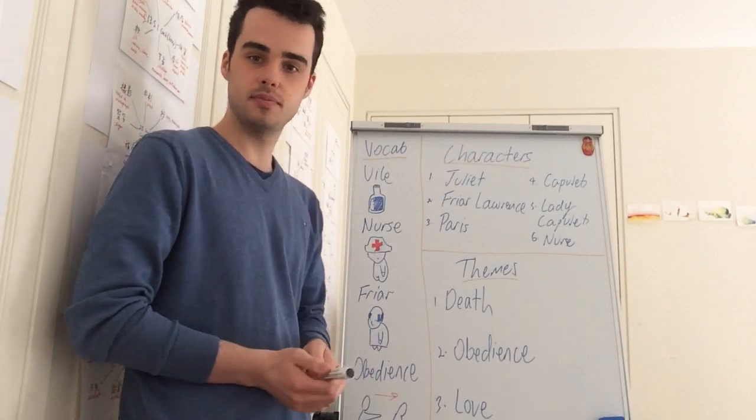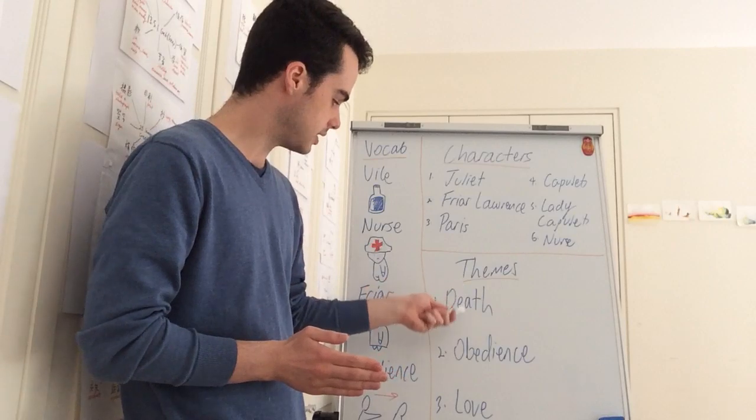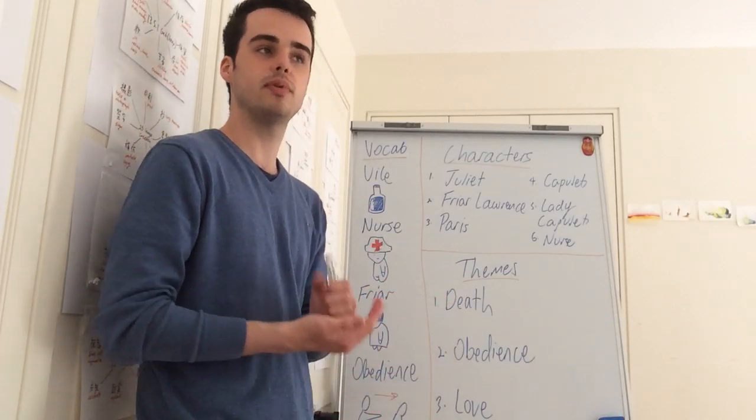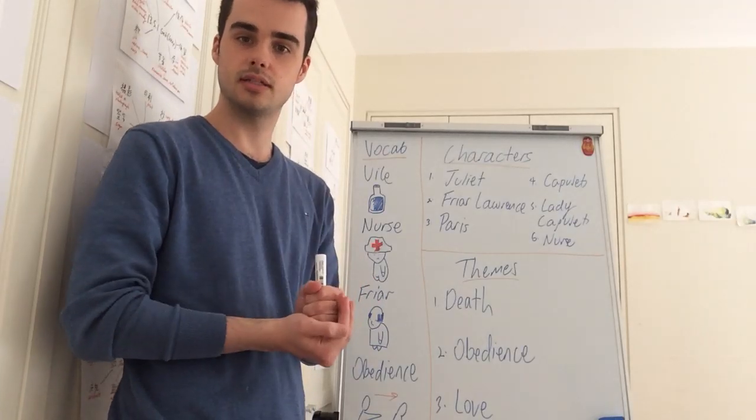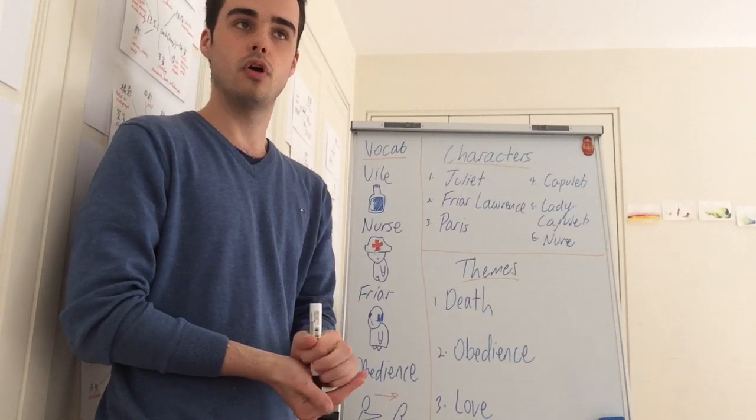Next we have the themes, so mainly what the text is about, which are death, obedience, and love, and this will be very important, not just in today's class, but in developing your writing for the text analysis.